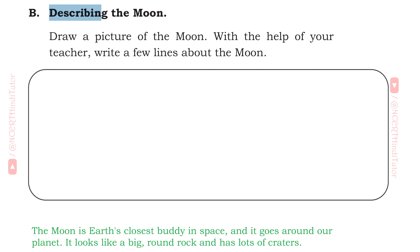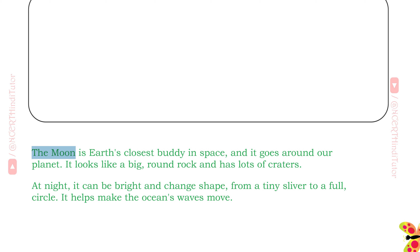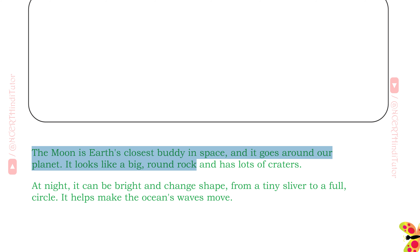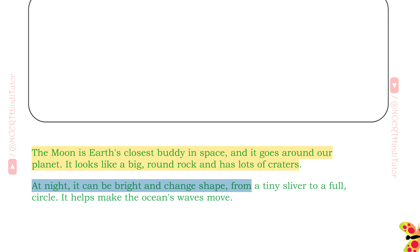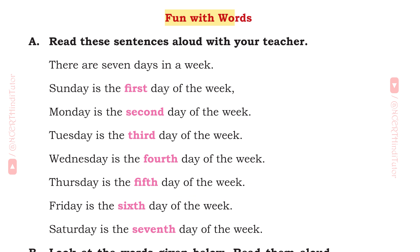B. Describing the moon. Draw a picture of the moon. With the help of your teacher, write a few lines about the moon. The moon is Earth's closest body in space and it goes around our planet. It looks like a big round rock and has lots of craters. At night, it can be bright and change shape from a tiny sliver to a full circle. It helps make the ocean's waves move.